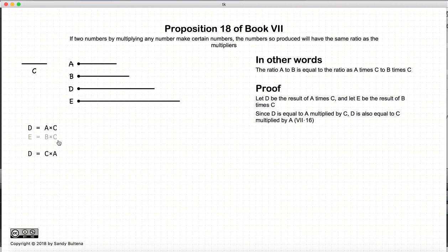Now we know from Proposition 16 of this book that if D is equal to A times C, it is also equal to C times A, and likewise E is also equal to C times B.